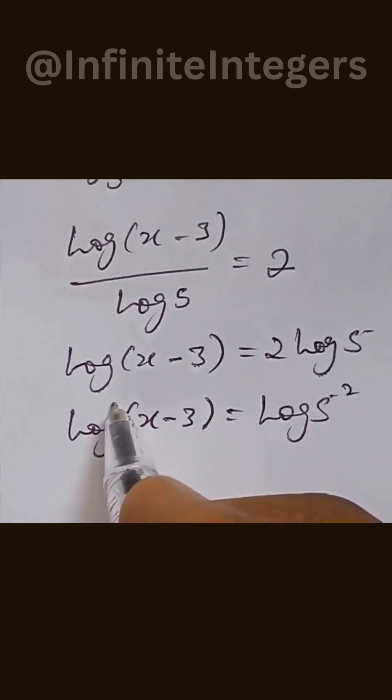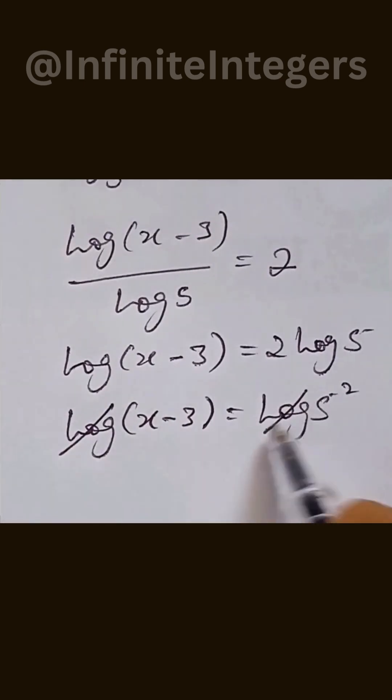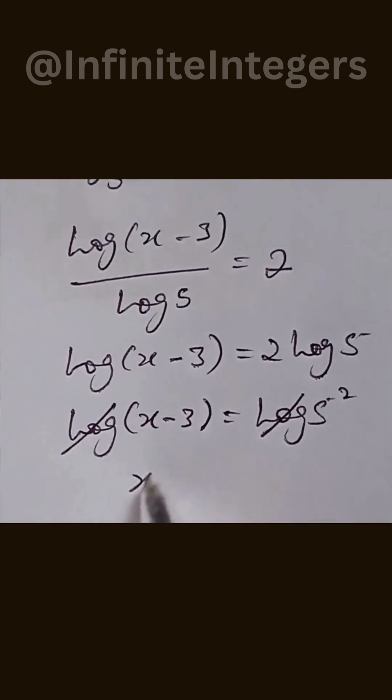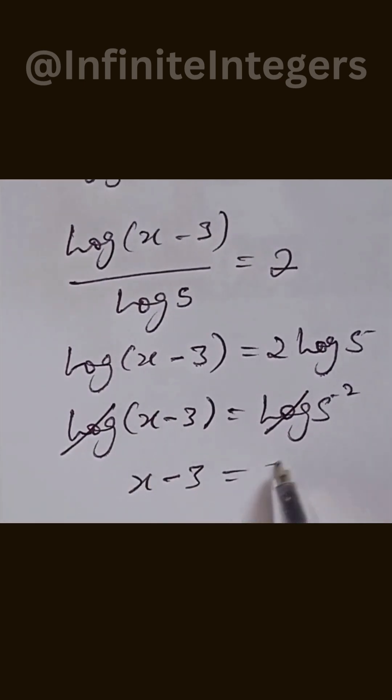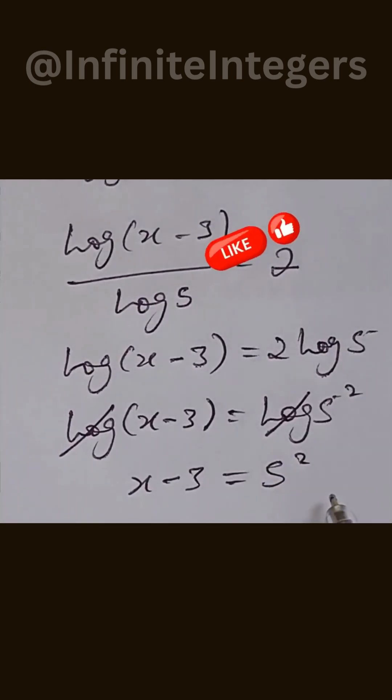Then we can cancel out the log, so we have x minus 3 equal to 5 to the power of 2.